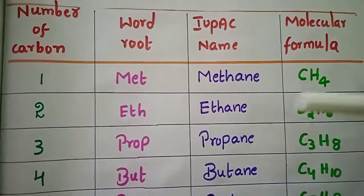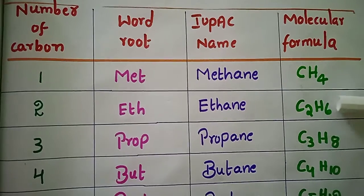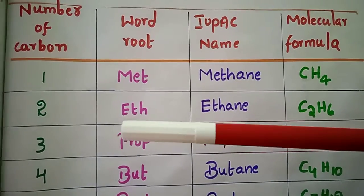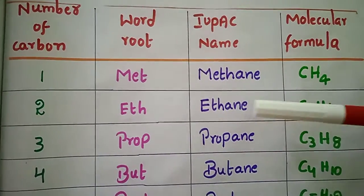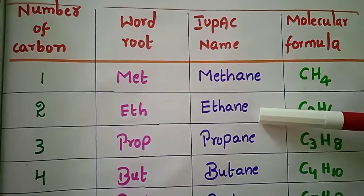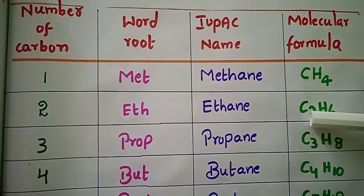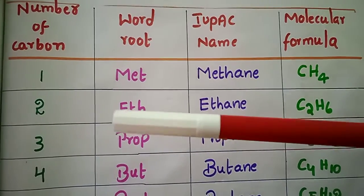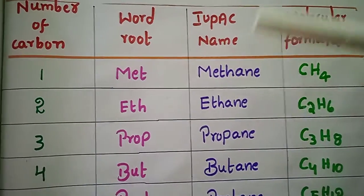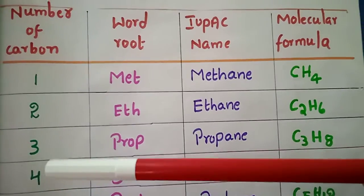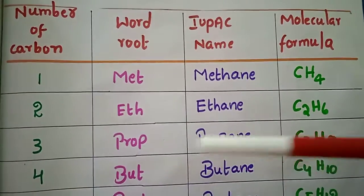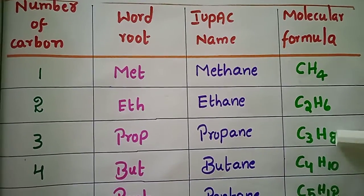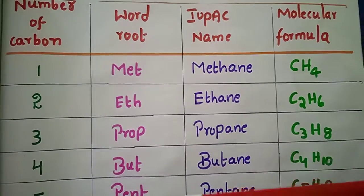When there are 2 carbons, the formula is C2H6, and the word root is 'eth' — ethane. Always with 2 carbons, the name starts with 'eth.' For 3 carbons, the word root is 'prop' — propane, formula C3H8.